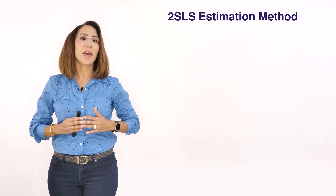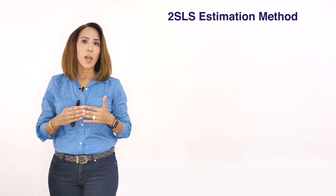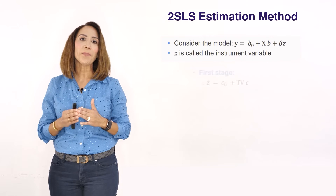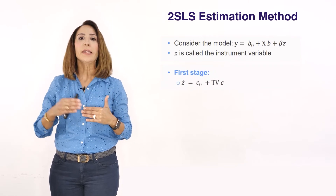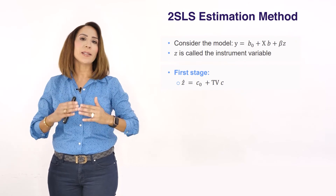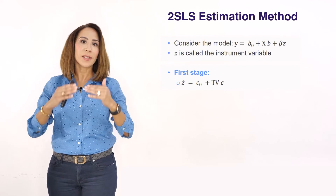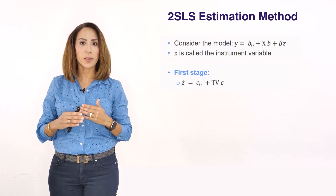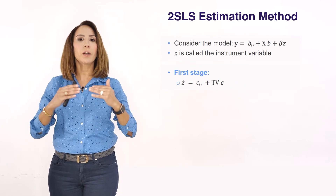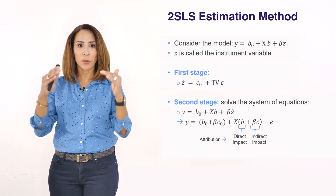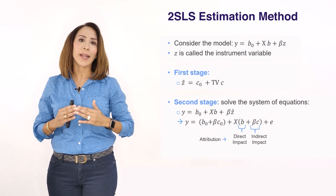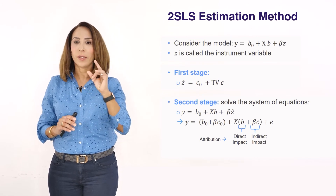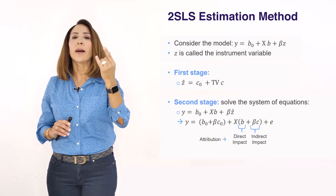How does the 2SLS method work? Imagine we have two equations. The first is the main equation — for example, sales are influenced by search and TV. The second equation is that search is influenced by TV and other variables. The first model is called the main model and the second is called the reduced or secondary model. We first estimate the secondary model, obtain the coefficients, and then plug that equation into the main model to estimate both the direct and indirect impact. A variable appearing in both models will have a direct impact through the main model and an indirect impact through the secondary model.